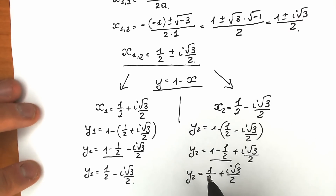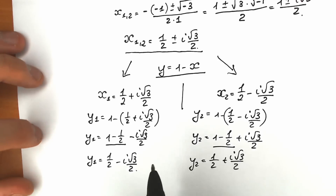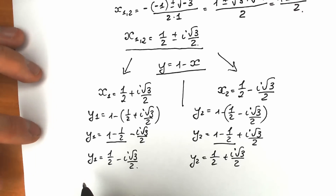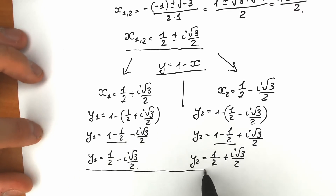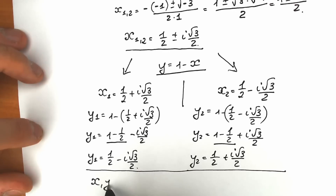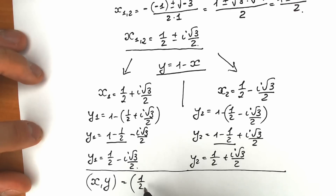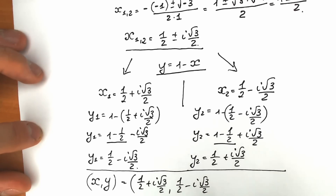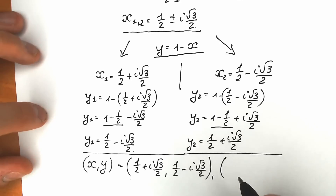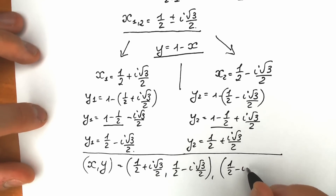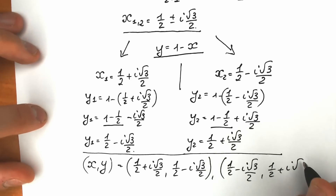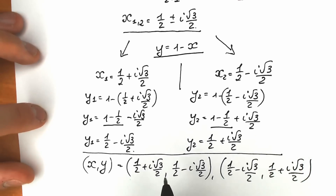So as you can see, we have two pairs of solutions. Our first pair: x₁ = 1/2 + i√3/2 and y₁ = 1/2 − i√3/2. Our second pair: x₂ = 1/2 − i√3/2 and y₂ = 1/2 + i√3/2. These are our pairs of solutions, the first one and the second one.